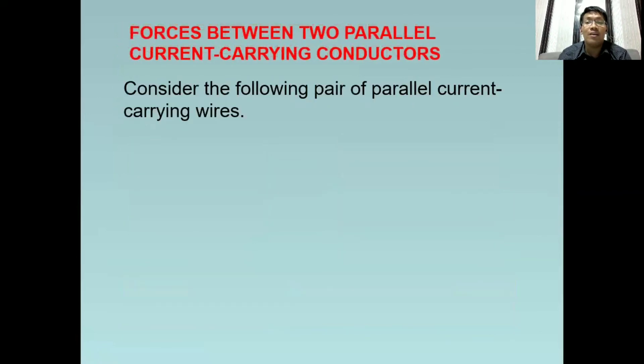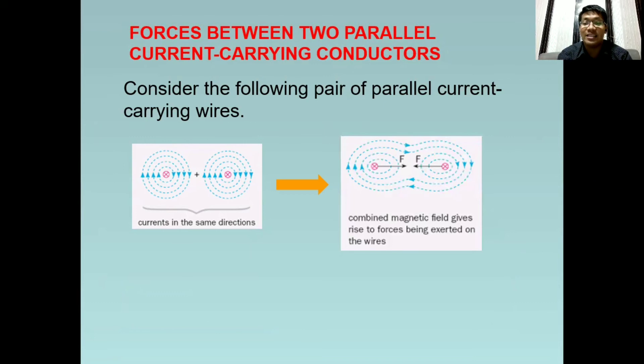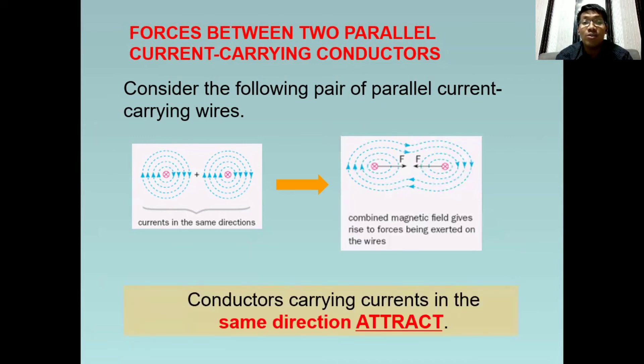How about this one? So we have the same direction of current. So both of these are inward or into the plane or away from you. So the result will be like this. So the conductors carrying currents in the same direction will attract each other. So they will move towards each other.